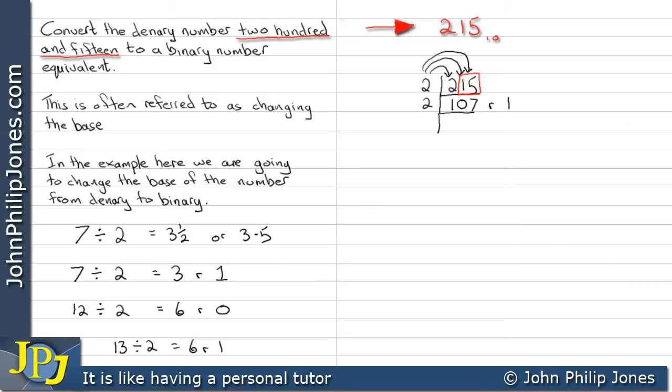Then we do the same again. We say how many twos go into ten? Well the answer is five. And then how many twos goes into seven? Well it's three with one remaining. Then we say how many twos go into five. Well it's two with one remaining. So we take that one up there.